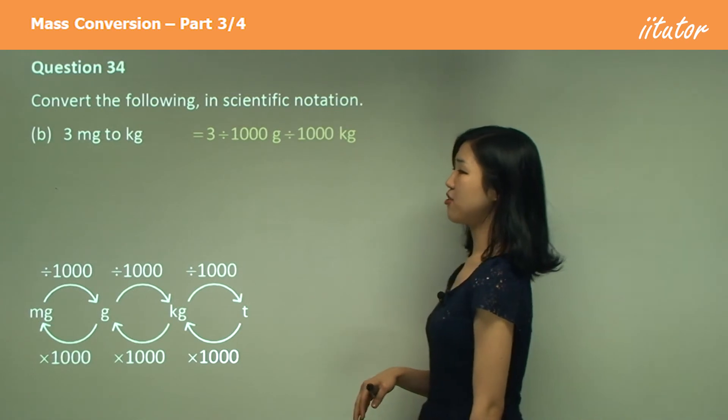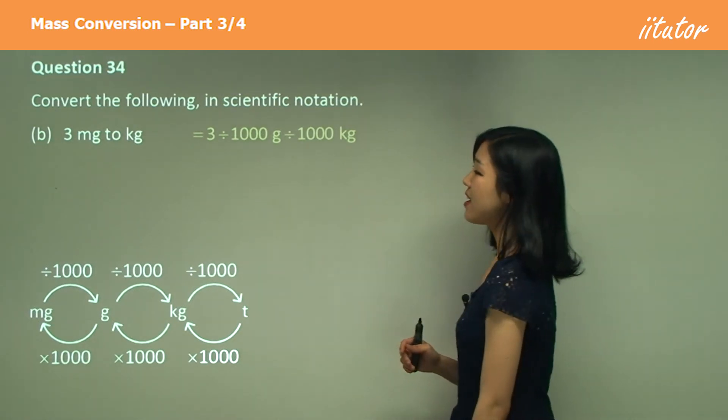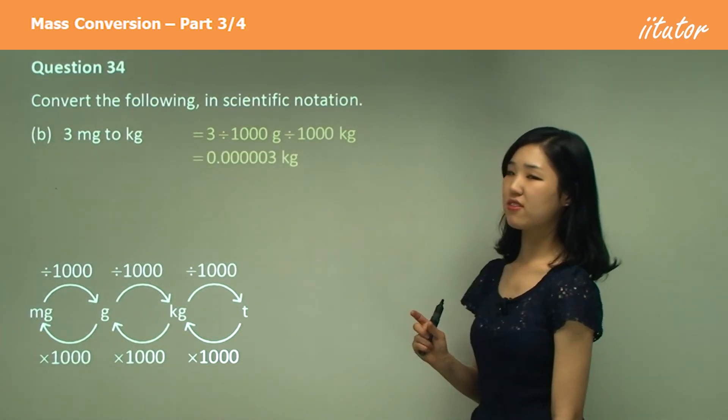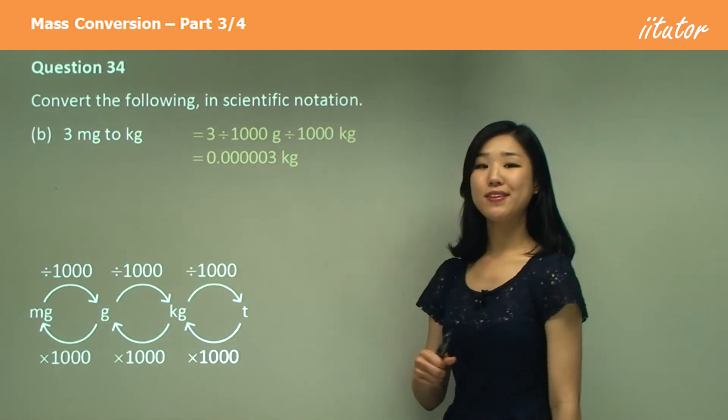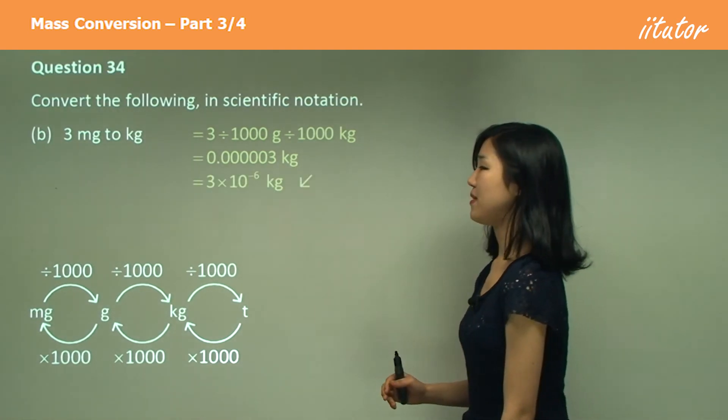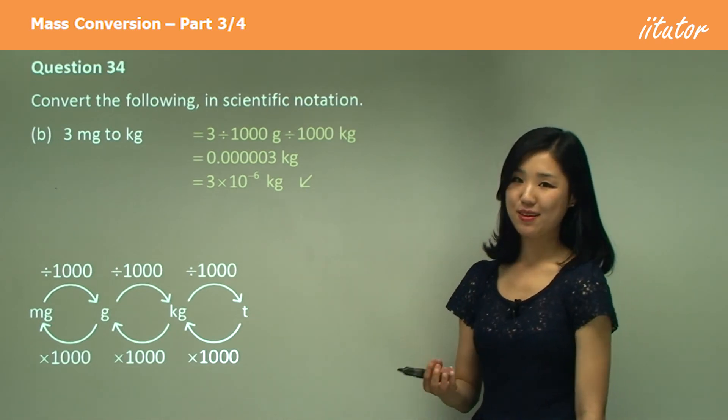Again, divide by a thousand two times, exactly same as a. So it's going to be that really small decimal. And count how many decimal places we need to go to the left should be six. So ten to the power of negative six.